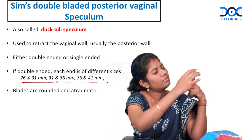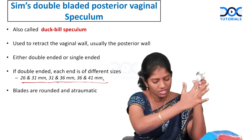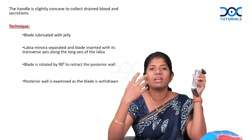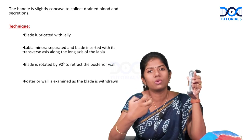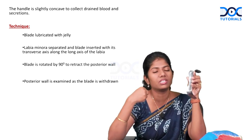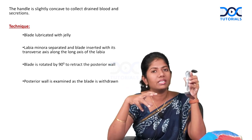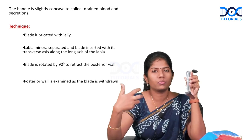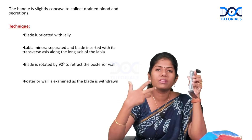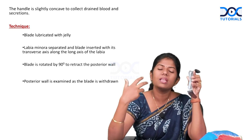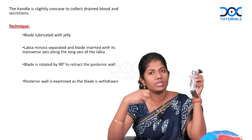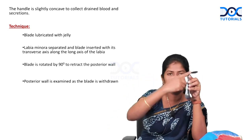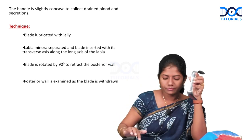There is a depression running along the speculum for secretions to drain, because the cervix has columnar epithelium which is secretory and produces mucus. The vagina itself does not have secretory activity since it is lined by stratified squamous epithelium. All vaginal secretions are either derived from the cervix or are sheddings of vaginal epithelium.